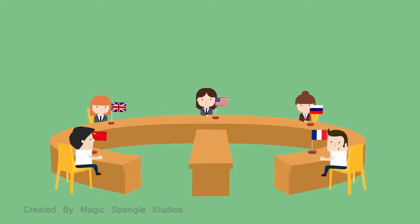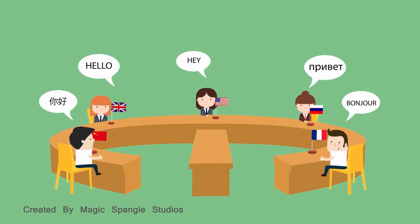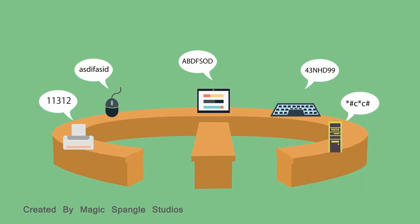A computer system is like the United Nations, with components coming together that speak many different languages. Just as the United Nations relies on translators to make sure everyone understands what's going on, a computer relies on drivers.